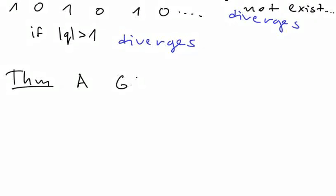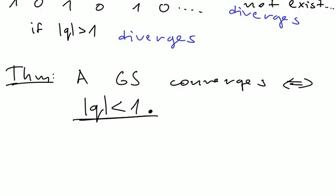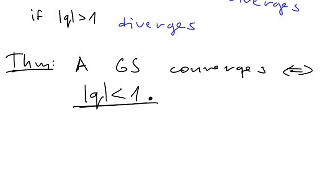So we can state our first result: a geometric series converges if and only if the absolute value of q is strictly less than 1, and otherwise it diverges.